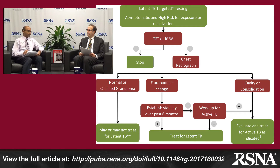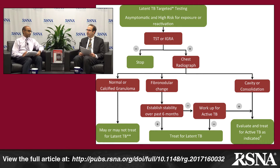If we cannot establish six-month stability — because previous chest x-rays are unavailable or we're unsure — then the patient should be worked up for active TB, as fibronodular changes could harbor some manifestation of active disease. Workup for active TB involves getting sputum samples and testing with AFB, nucleic acid amplification test, and culture. The third leg is if findings show a cavity or consolidation — that should make us think more of active TB, and the patient should be worked up accordingly.